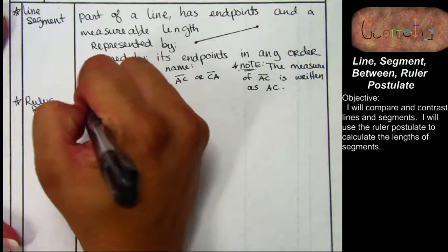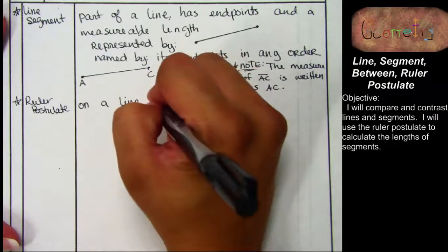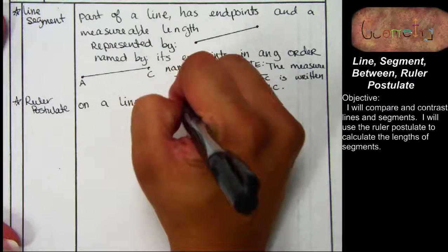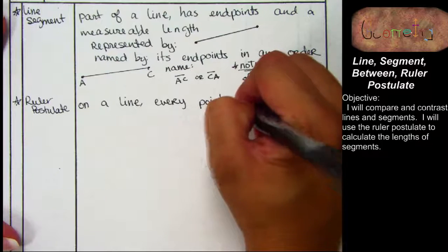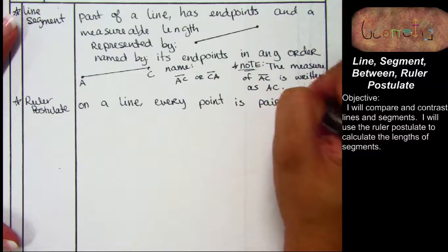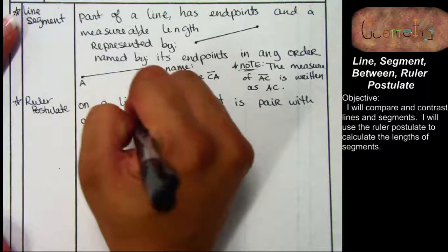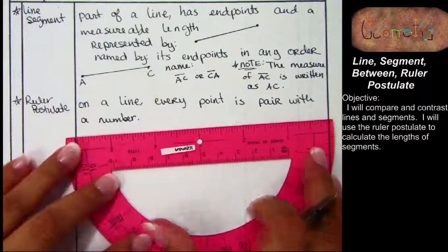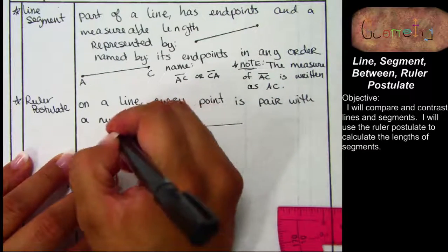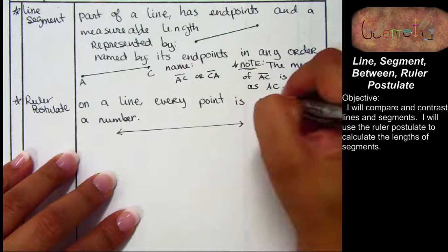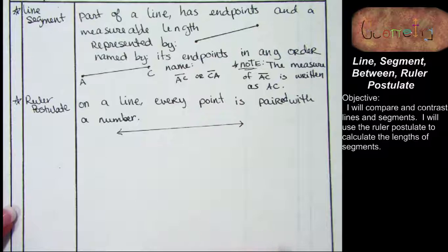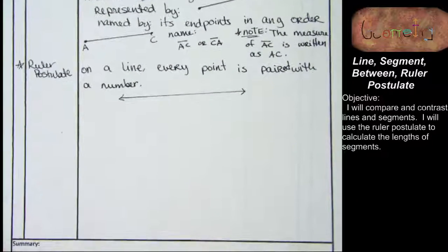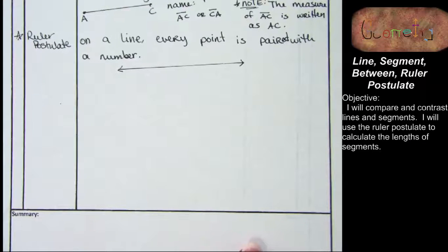So we're going to say with our ruler postulate that in order to make a ruler, we can take a line and every point on the line, we can pair with a number. Could it be paired and not just a number? Oh, you're right. Paired with. Thank you. Every point is paired with a number. Thank you so much. It is clearly the end of my day. The moment we do that, we have a ruler.